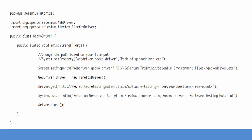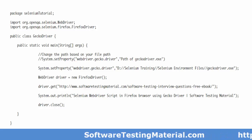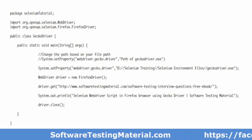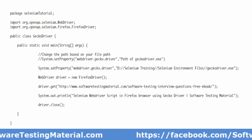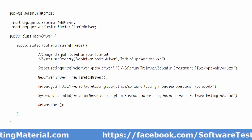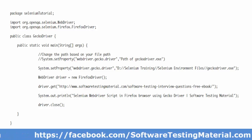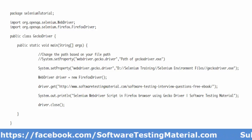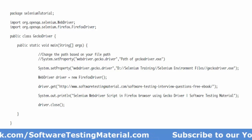In the Selenium script, I am using System.setProperty, which means I am setting the property of GeckoDriver. In the parenthesis, I am taking two parameters: webdriver.gecko.driver, and the path of the GeckoDriver as the second parameter. Then you can write your script as usual: WebDriver driver = new FirefoxDriver() and driver.get() with some URL. Then you can see the output.